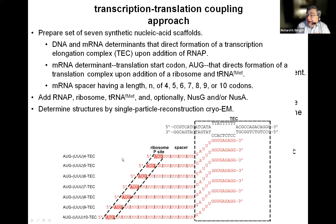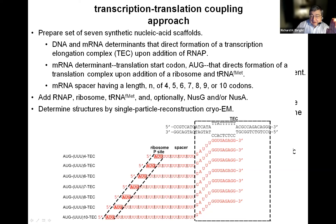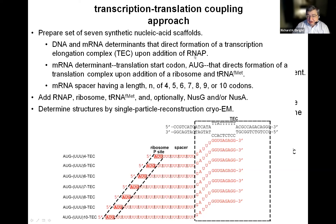We took advantage of the power of cryo-EM—in particular its power to address large complexes such as a complex comprising both RNA polymerase and a ribosome, and its power to address many complexes quickly without the need for crystallization. We determined structures of transcription-translation coupling complexes with seven different nucleic acid scaffolds. All of these scaffolds contained DNA, and each contained one of seven RNA molecules. Each scaffold contained the determinants that direct formation of a transcription elongation complex upon addition of RNA polymerase, and messenger RNA determinants—namely a translation start codon AUG—that direct formation of a translation complex upon addition of a ribosome and initiating tRNA.